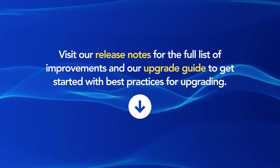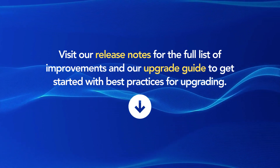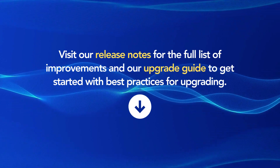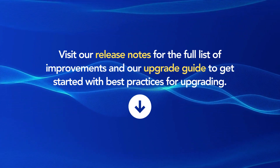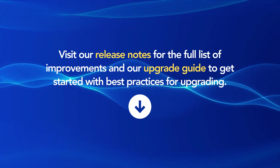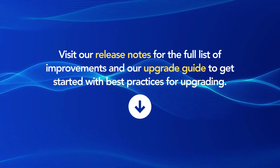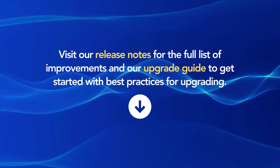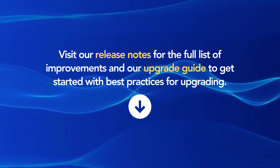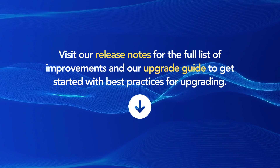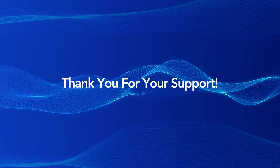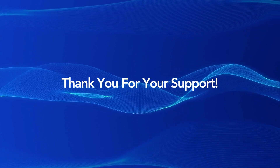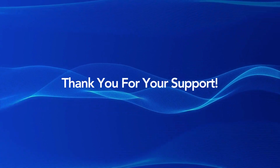In addition to the above highlights, over 100 other updates have been included in this release across many functional areas. The release notes and upgrade guide are available with the full list of improvements and best practices for upgrading. For cloud platforms where pfSense Plus is available — AWS and Azure — pfSense Plus software version 2305 will be available as soon as the publishing process for each platform completes. Our efforts are made possible by the support of our customers and the community. Thank you and talk to you soon.